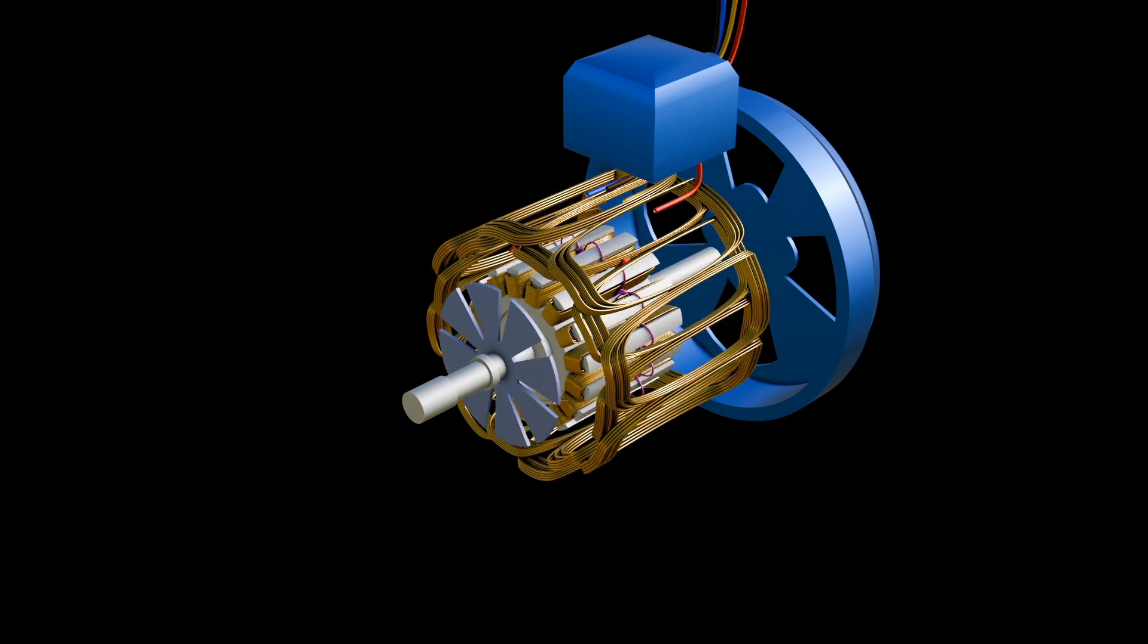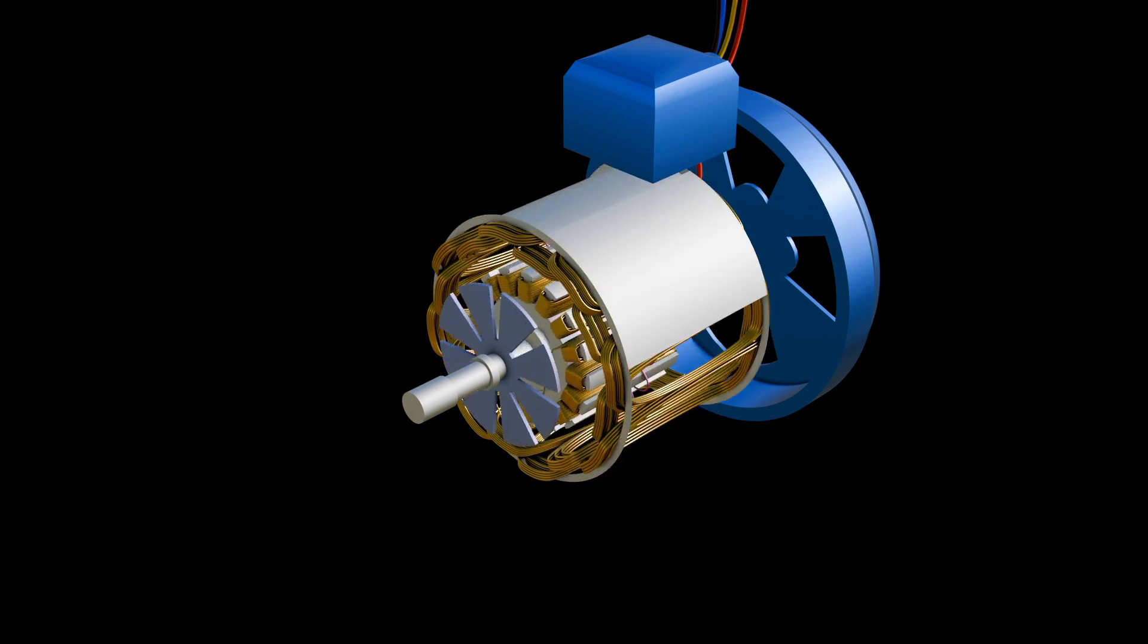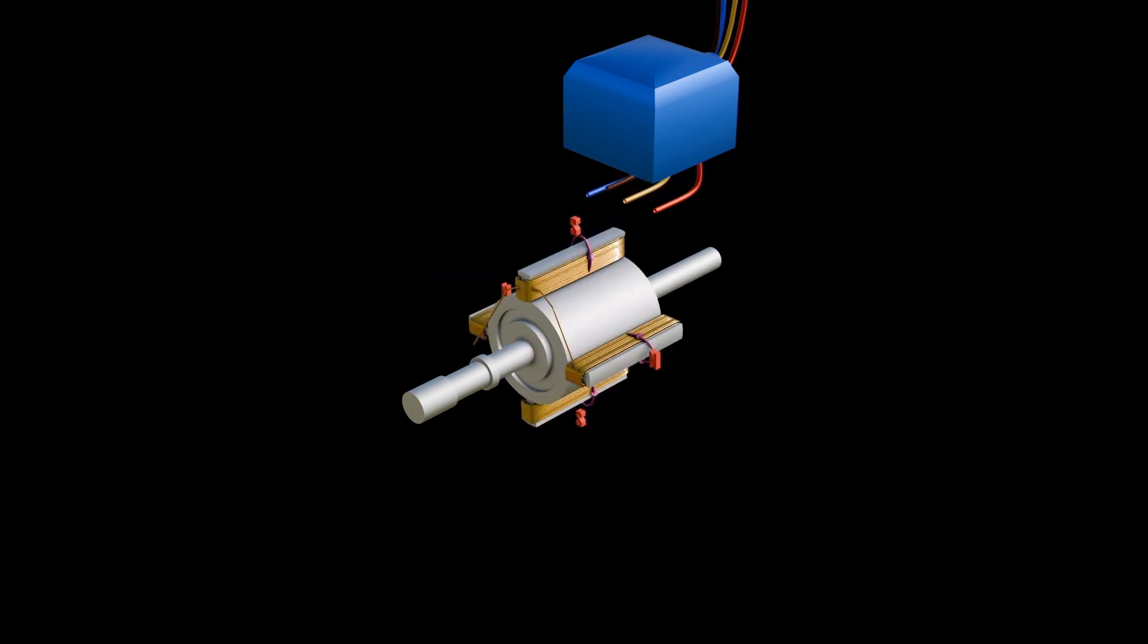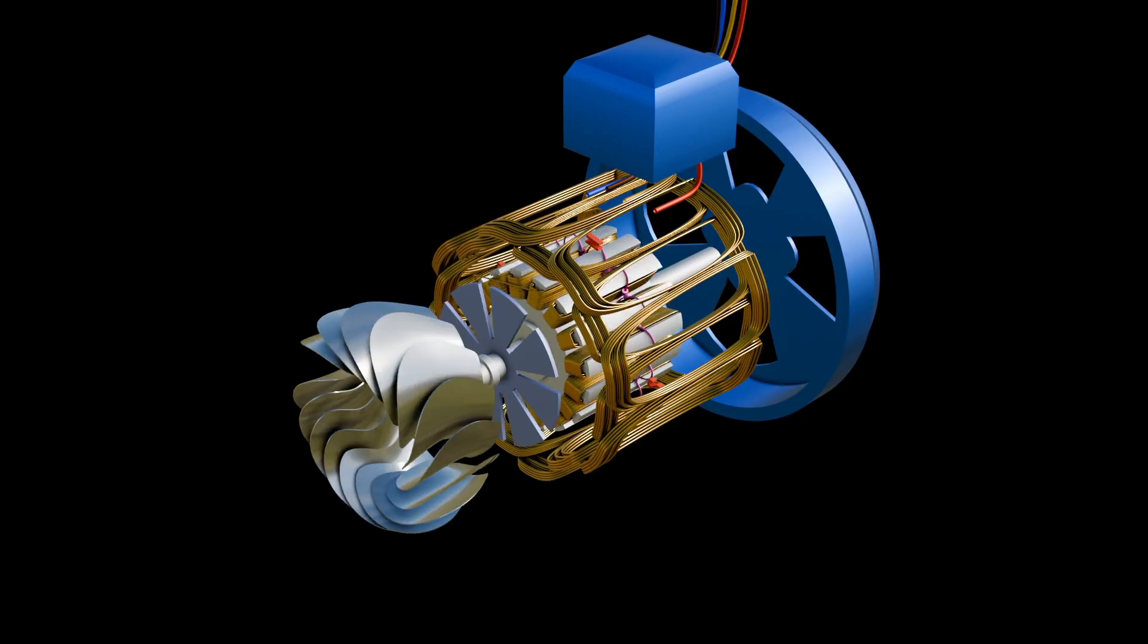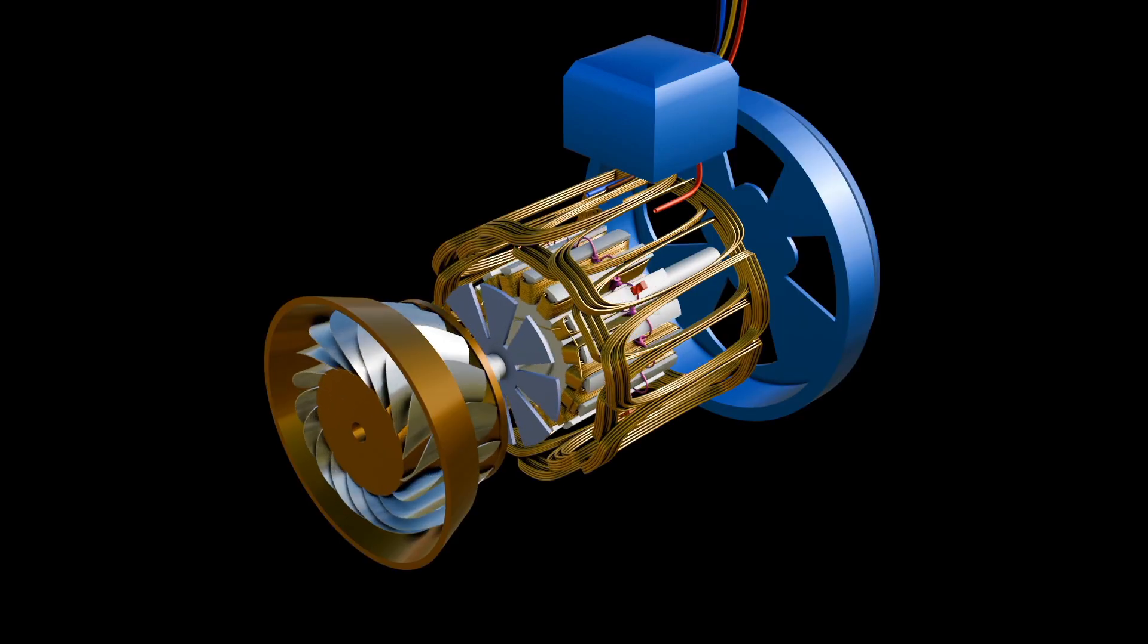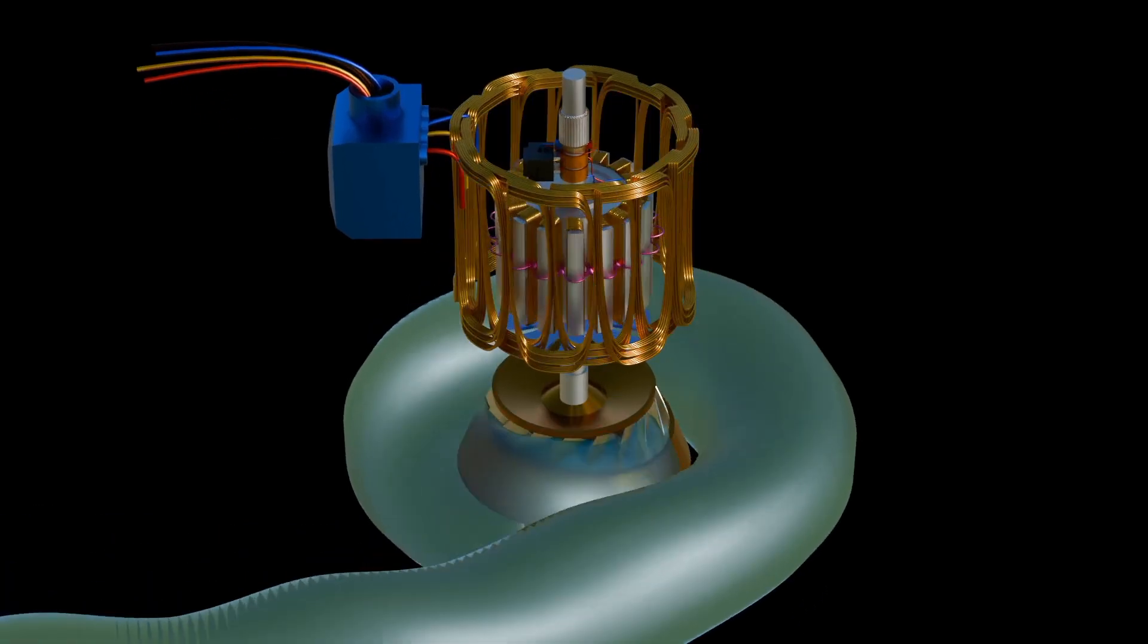This type of rotor is a salient pole rotor. The rotor with induced magnetic fields needs a prime mover, which is usually a turbine. Turbines, for example Francis turbines, have a special shape that enables water to rotate them.